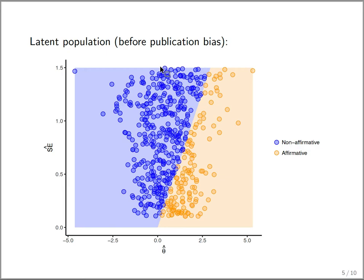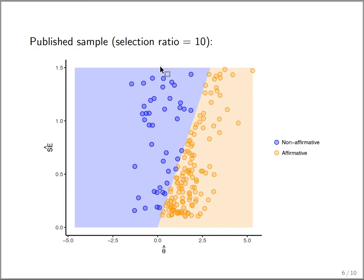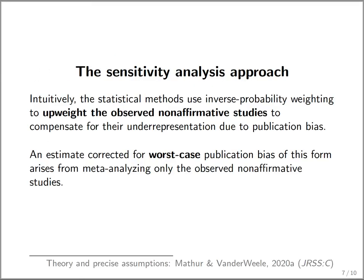When we introduce publication bias with a selection ratio of 10, the non-affirmative results each have basically a 10% chance of getting published, and we see a thinning out of non-affirmative results in the plot. The statistical methods deal with this using inverse probability weighting to upweight the observed non-affirmative studies, compensating for their under-representation due to publication bias.